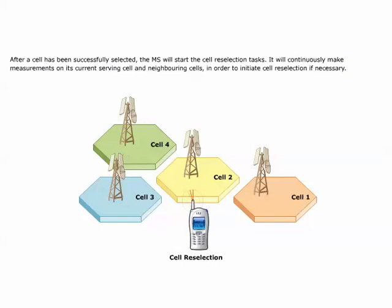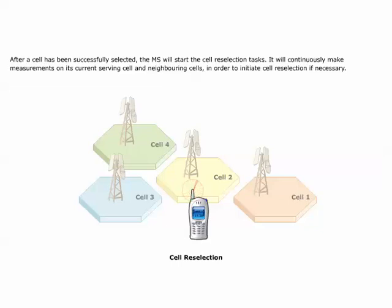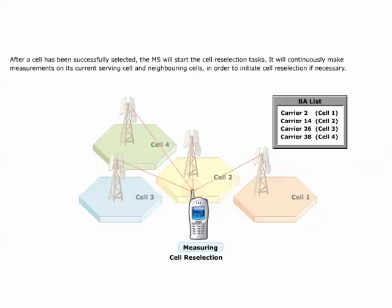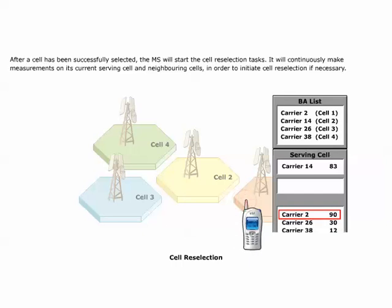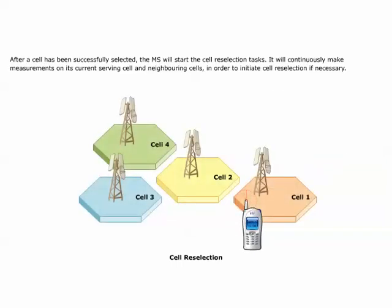After a cell has been successfully selected, the MS will start the cell reselection tasks. It will continuously make measurements on its current serving cell and neighboring cells in order to initiate cell reselection if necessary. The MS continuously monitors all neighboring BCCH carriers, as indicated by the BA list, in addition to the BCCH carrier of the serving cell, to detect if it is more suitable to camp on another cell. At least five received signal level measurement samples are required for each defined neighboring cell. A running average of the received signal level will be maintained for each carrier in the BA list. In order to control the traffic distribution between cells, Ericsson GSM system allows the operator to favor certain cells in dedicated mode. For these purposes, additional cell reselection parameters are broadcasted on the BCCH of each cell.